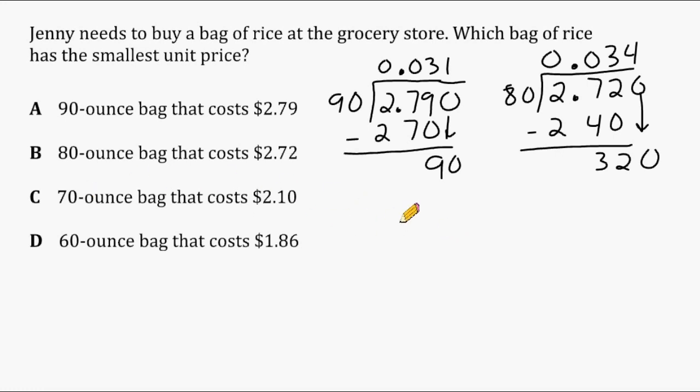Let's go ahead and look at bag C here, which is $2.10. We have to divide that by 70 ounces. 70 does not fit into 2, nor into 21, but it fits into 210 exactly three times. So we don't have anything remaining. So we would say that for a 70 ounce bag of rice that's $2.10, the unit cost would be 3 cents per ounce.